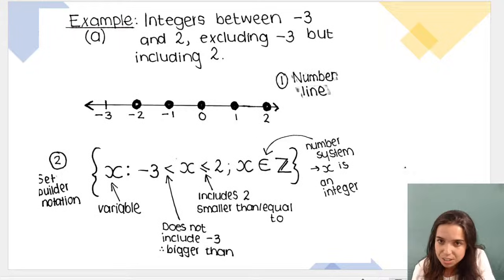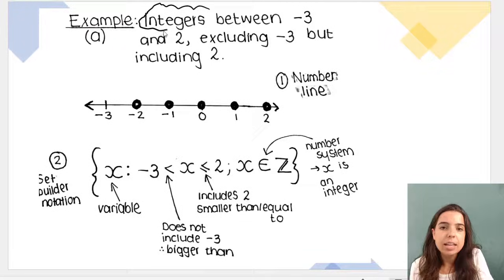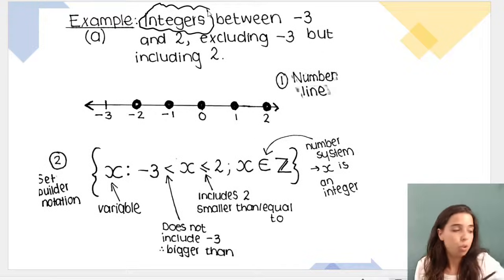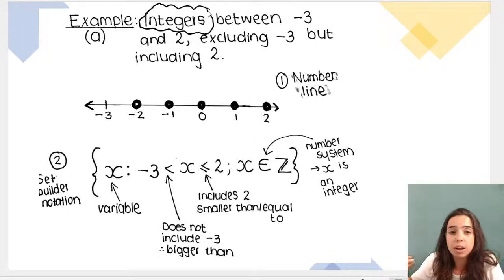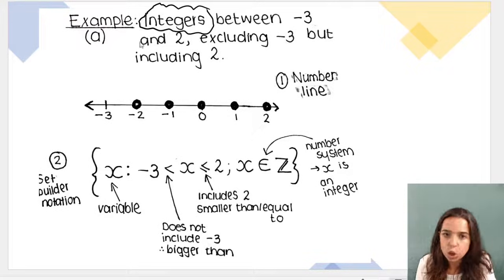Here I'm considering integers, those are the positive and negative numbers. Integers between negative 3 and 2, starting at negative 3 on the negative end of our number line, going up to 2, and then read carefully it says excluding negative 3 but including 2.